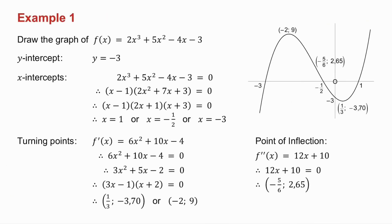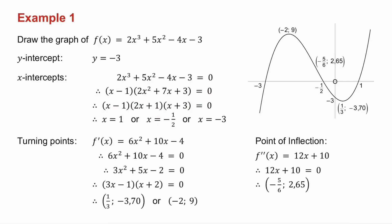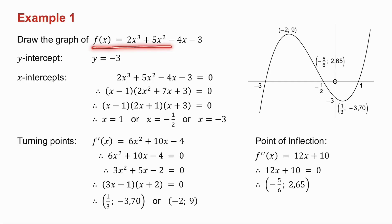Example number one — we're going to draw a graph together. To get the y-intercept I make x equal to zero and I get a y-intercept of minus three. To get the x-intercepts I make y equal to zero and factorize the cubic, giving me three x-intercepts. To find the turning points I take the derivative, make it equal to zero, and solve for x. I then substitute those x-values into f of x to get the corresponding y-values.